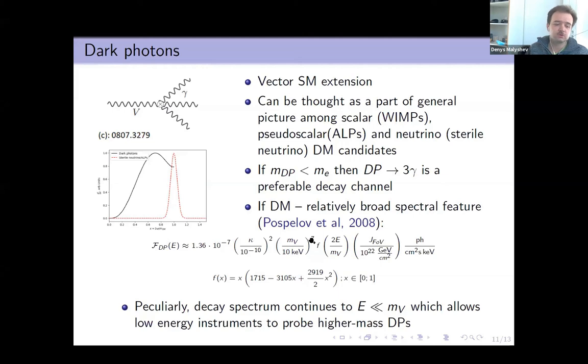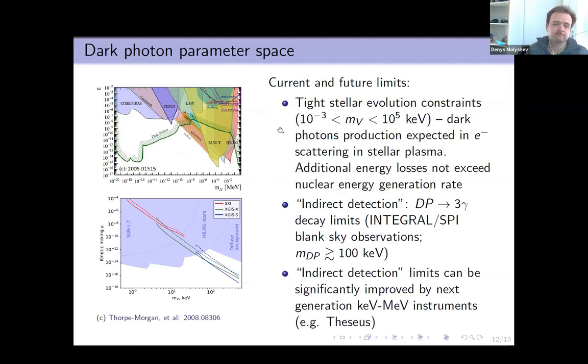Currently, constraints originate from stellar cooling. We can produce dark photons in the stars and this opens additional energy loss channel. Comparison of these energy losses to nuclear energy generation rate can allow us to put some constraints on dark photons. Indirect detection can be done via observations in a blank sky region, in the Milky Way dark matter observations, for example. The strongest limit currently is from INTEGRAL SPI of blank sky.